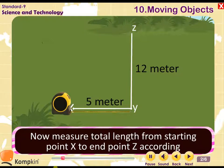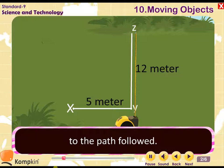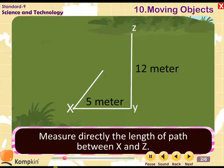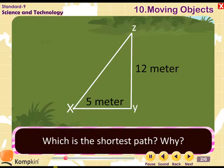Now measure total length from starting point x to end point z according to the path followed. Measure directly the length of path between x and z. Which is the shortest path?